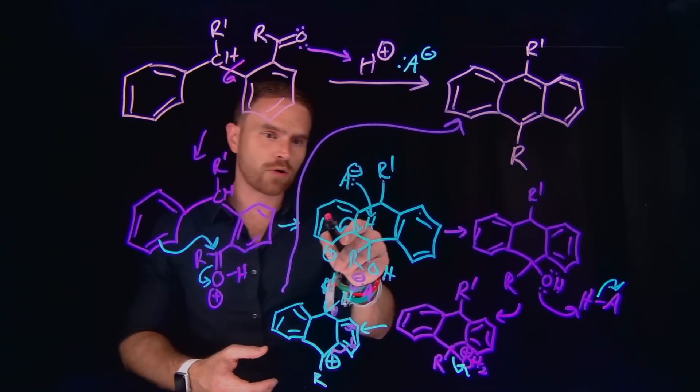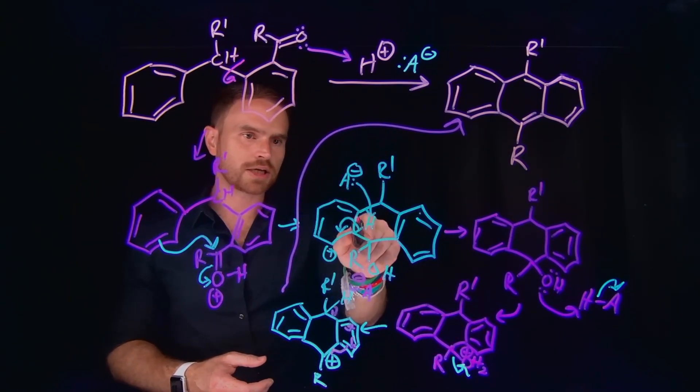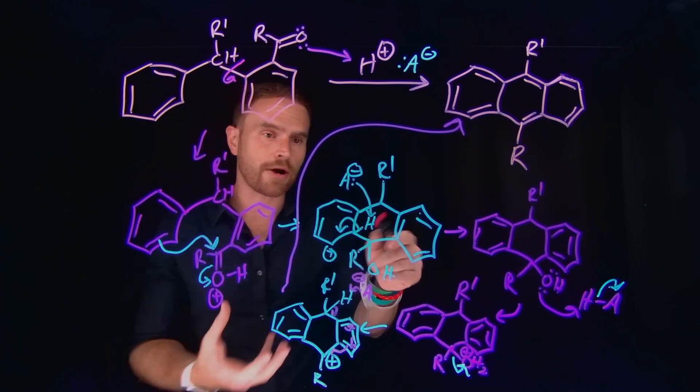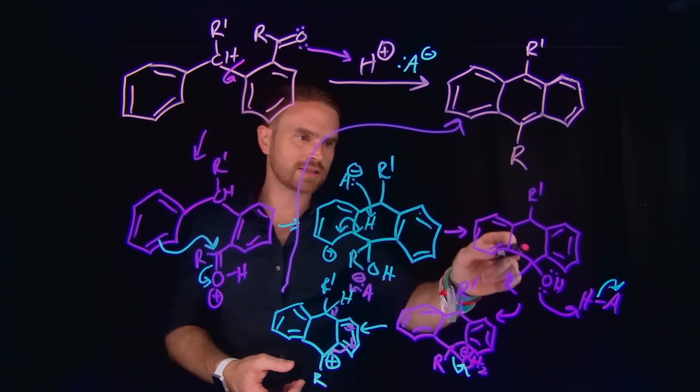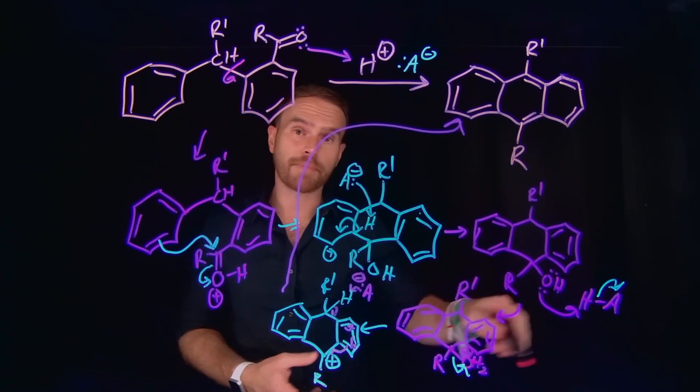Subsequently, we form our arenium stabilized carbocation, which can reform our aromatic ring by deprotonation of one of those hydrogens, which will get us to this stage where we end up with an alcohol that can be protonated by the reformed acid.